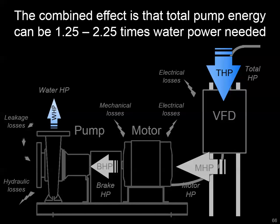That covers the full energy chain — from what the water actually needs, all the way to what your electric meter sees. We want to account for all those upstream inefficiencies to understand what it would actually cost in energy and dollars at the utility meter for a particular set of pumping system conditions.